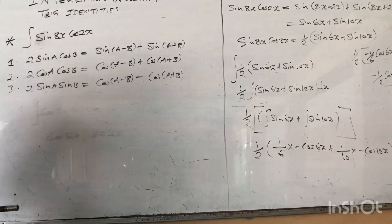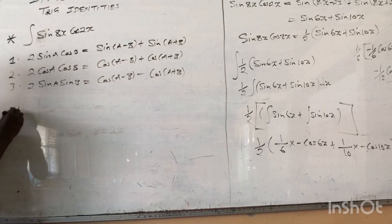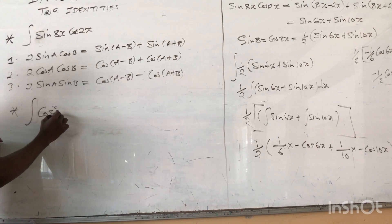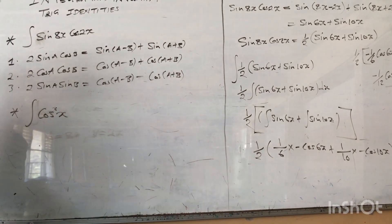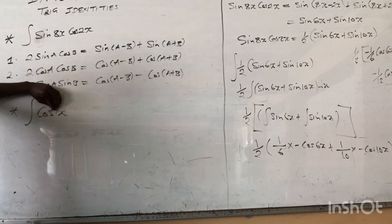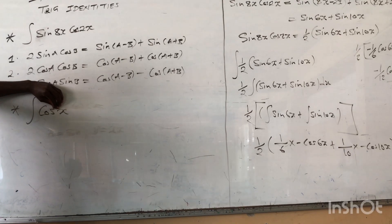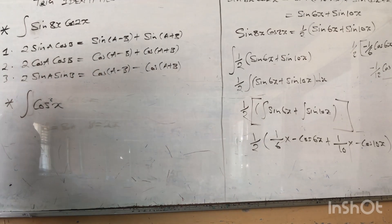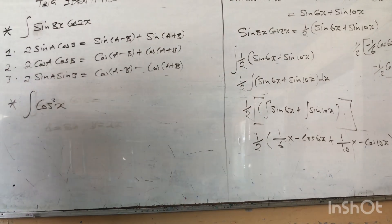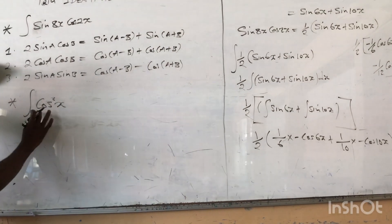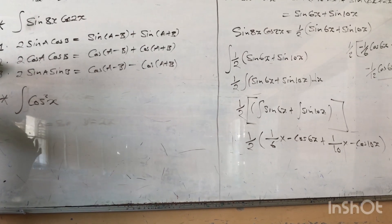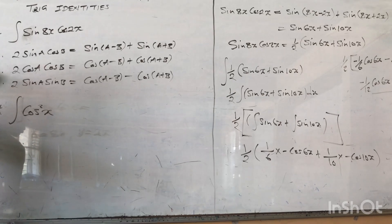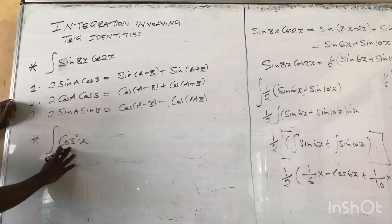What if you have something like this — you want to integrate cos²(x)? We know that the integral of cos(x) is easy and just gives us sin(x). But what if it is squared? When it is squared, we involve a trig identity, because cos²(x) is not a standard common integral we can work with directly.